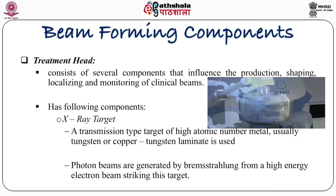The treatment head consists of several components that influence the production, shaping, localizing, and monitoring of the clinical beam. It has the following components. The X-ray target is a transmission type target of high atomic number material, usually tungsten or copper — tungsten laminated is used. Photon beams are generated by bremsstrahlung radiation from a high energy electron beam striking this target. When high energy electrons strike the target, photons are generated in the forward direction. The treatment head also contains a flattening filter. The bremsstrahlung radiation contains various energies from lower to high energy, with a peak at the most probable energy in the output of the linac.